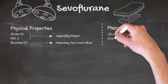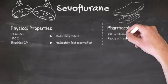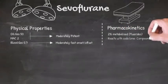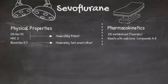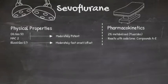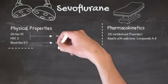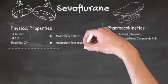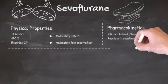2% of it is metabolised in the body to both organic and inorganic fluorides, some of which are potentially toxic. It's also relatively unstable in the presence of moist sodalime, producing potentially toxic substances including compounds A to E. Compound A is most associated with potentially nephrotoxic effects, but clinically its concentration never reaches the threshold for these effects to manifest.